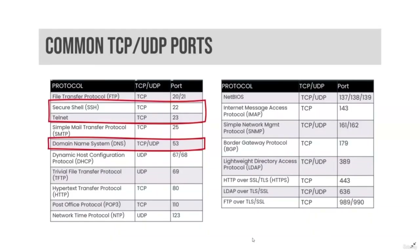SMTP is the Simple Mail Transfer Protocol, used to transfer email between servers. SMTP servers listen on TCP port 25. POP version 3, also known as Post Office Protocol, and IMAP, also known as Internet Message Access Protocol, are used for client-server email access, using TCP ports 110 and 143 respectively.